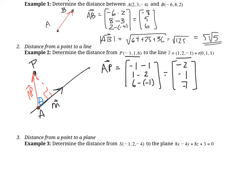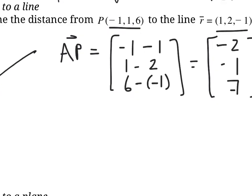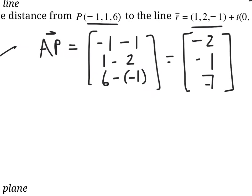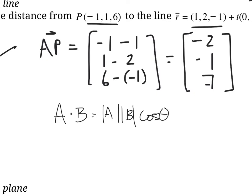Once we know vector AP, we have two vectors: AP and the direction vector M. We want to find the angle between those two using the dot product relationship: A dot B equals the magnitude of A times the magnitude of B times cos theta. If we know the dot product and the magnitudes, we can solve for cos theta.